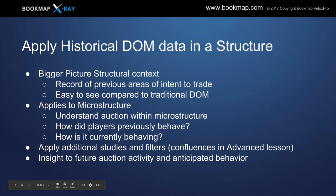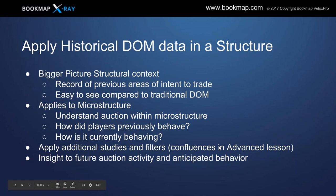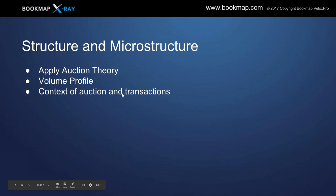Now we're going to apply that in a structure — get a bigger picture structural context. We have a record of the intent to trade in those previous areas, easy to compare to the traditional dome, and it applies to microstructure. We want to understand the context of that auction — how they previously behaved and are currently behaving. In the advanced lesson we'll add some additional studies and filters. This leads to insight into future auction activity and anticipated behavior.